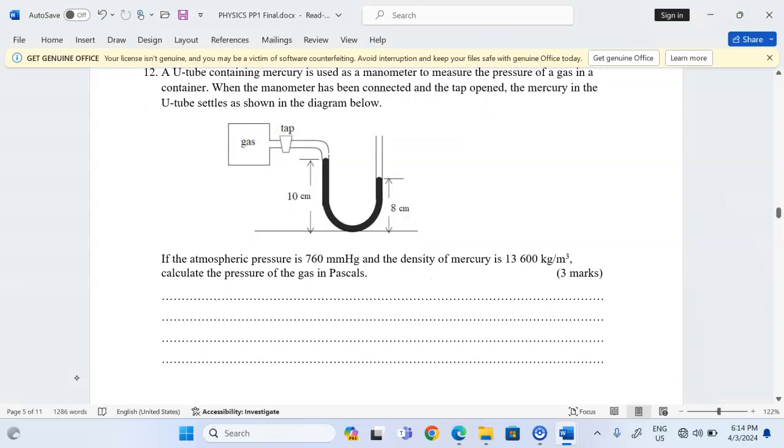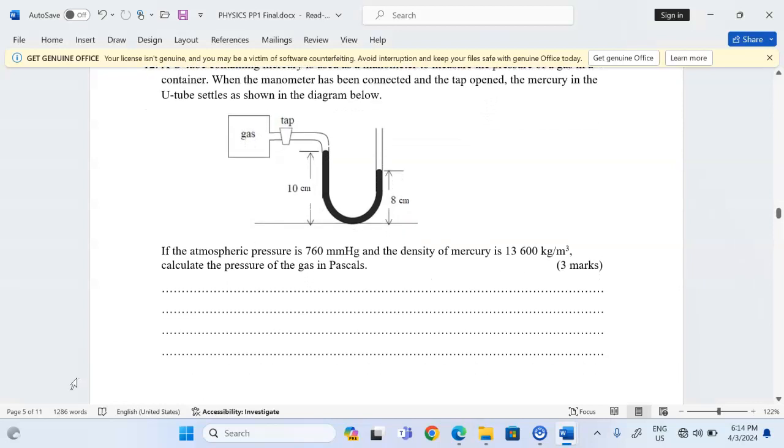Then we are told if the atmospheric pressure is 760 millimeters of mercury and the density of mercury is 13,600 kilograms per meter cubed, calculate the pressure of the gas in Pascals.